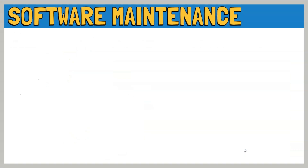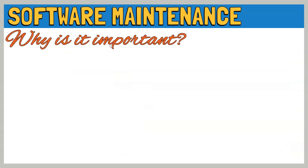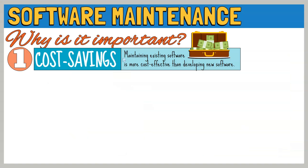Software maintenance is important for several reasons. First, cost savings. Maintaining existing software is more cost-effective than developing new software, which requires significant effort in coding, licensing, marketing, and more.